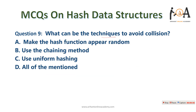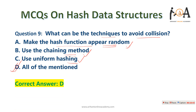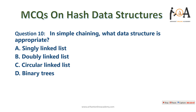What are the techniques to avoid collision? Option A: make the hash function appear random. Option B: use chaining — in chaining we use a doubly linked list so multiple elements can share the same index. Option C: use uniform hashing. All three are valid techniques, so option D — all of the above — is the correct answer.